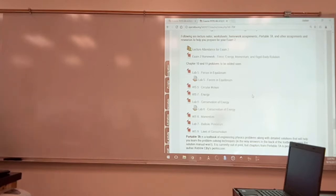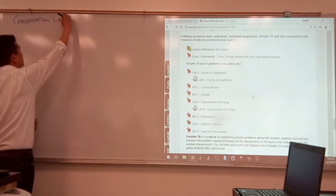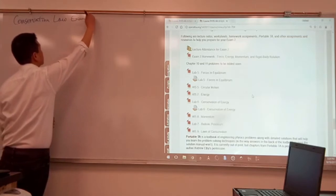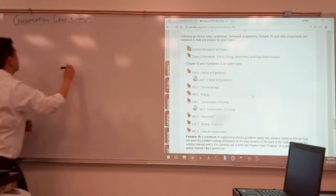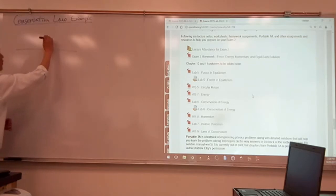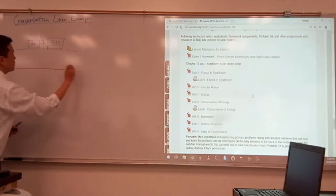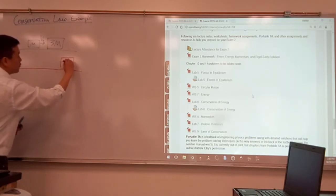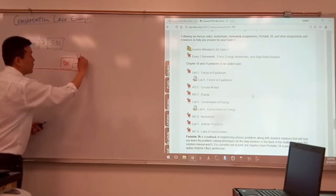So we are looking at conservation law example. So you have two carts interacting, one of mass 3m, the other one of mass m. It comes in with some initial velocity V naught. They interact with each other. And after interaction, the picture you get is that the cart of 3m, let's just give a general description, moves at some speed. Let me call it V final 2.